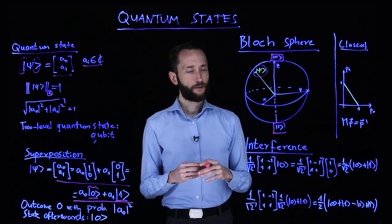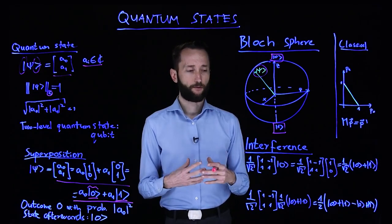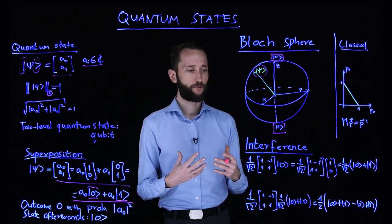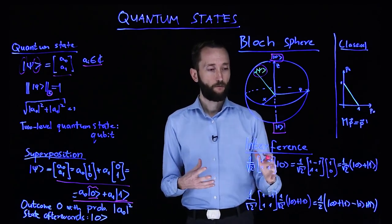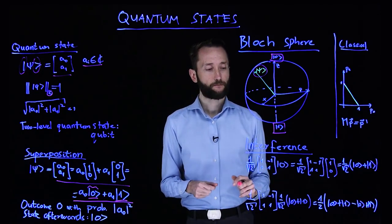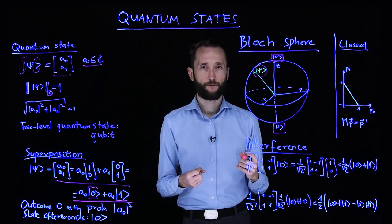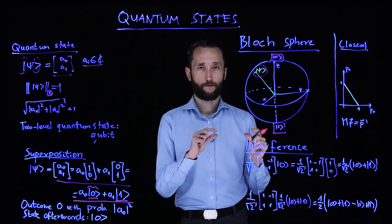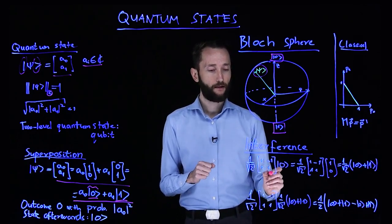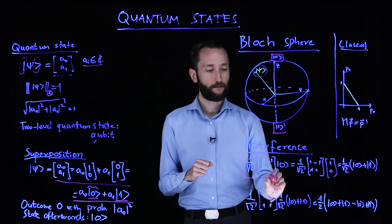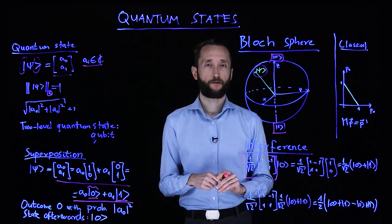Now, a couple of things that we can do with quantum states which we cannot do, for instance, in classical digital computers. One is called interference. Interference is a strange phenomenon where the different basis factors and the coefficients interact in your calculations. So imagine that you act on your zero ket with this particular matrix.